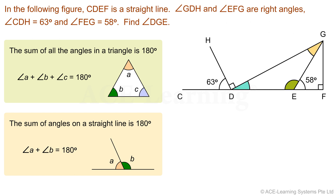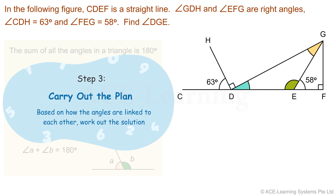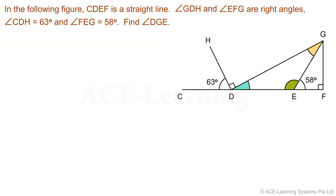Now that we know how the angles are linked to each other, we can proceed to Step 3: Carry out the plan. We start by finding the angle measurement of angle EDG. Angle EDG is one of the three angles on the straight line CDEF. The other two angles are 63 degrees and 90 degrees.